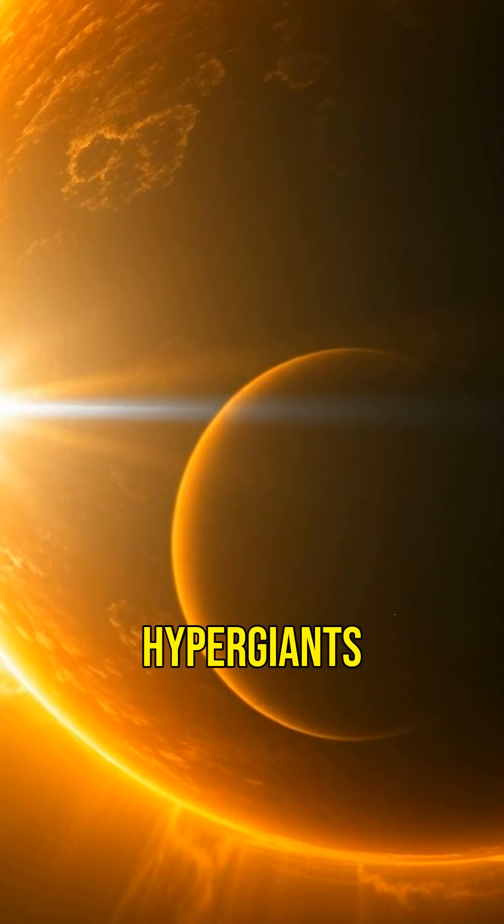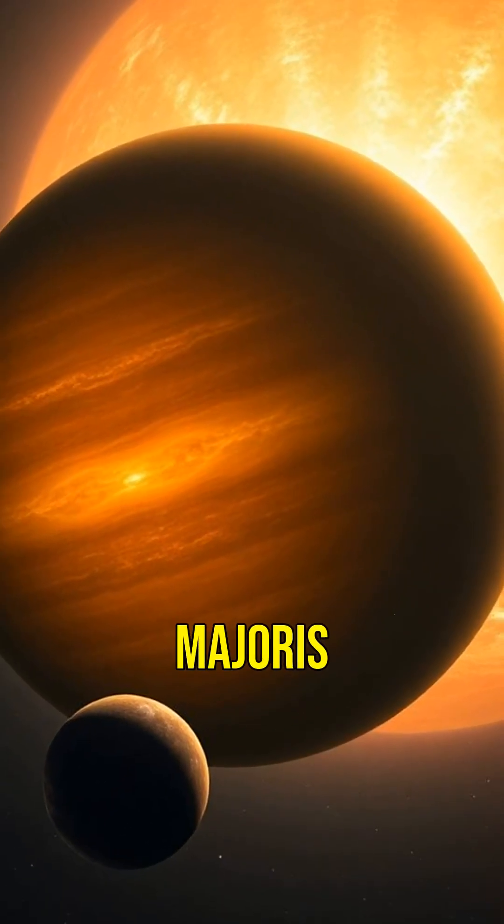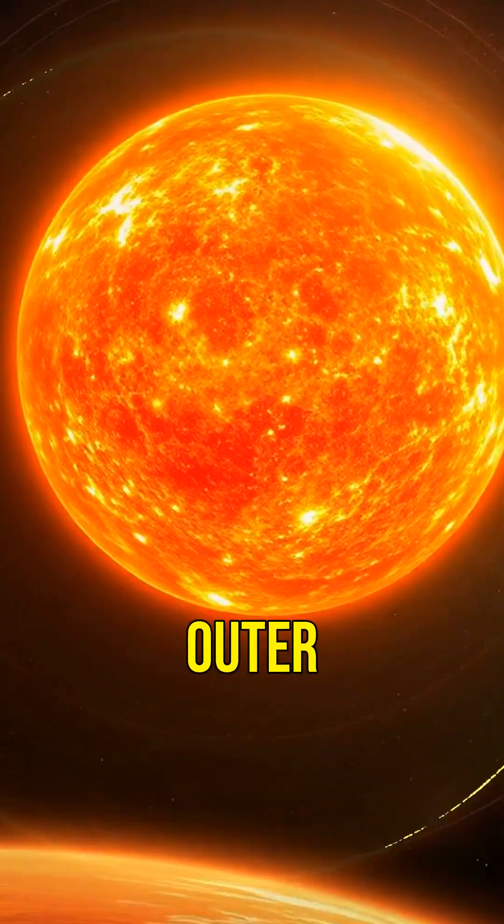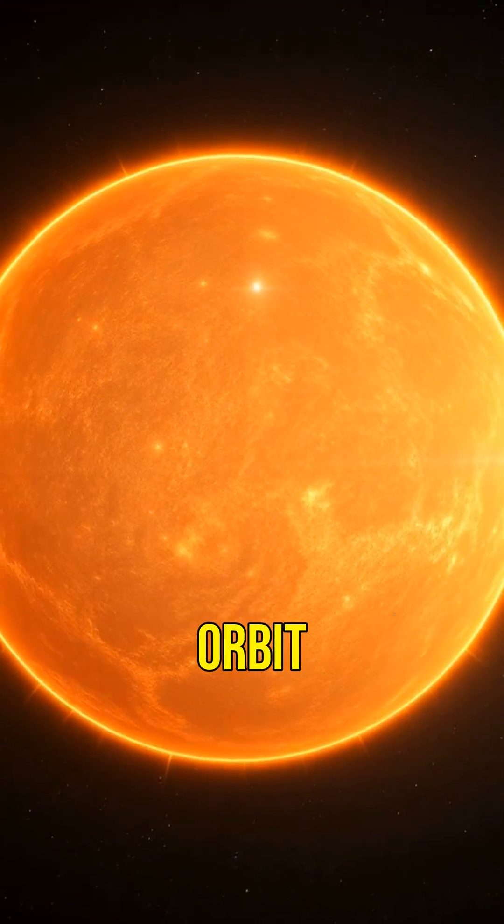One of the most famous hypergiants is VY Canis Majoris. If placed at the centre of our solar system, its outer layers would reach beyond the orbit of Jupiter.